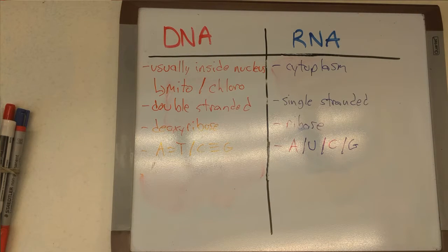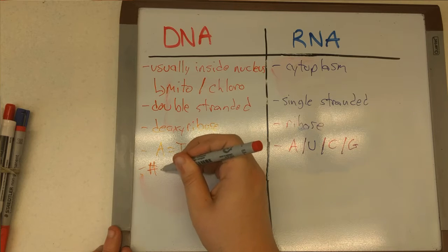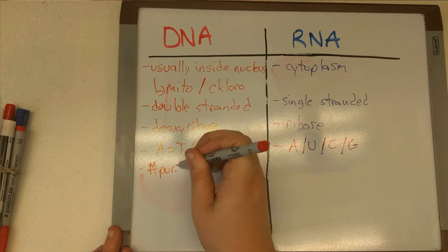RNA, on the other hand, does not have any base pairing, and just has adenine, uracil, cytosine, and guanine in its strands. Note that it is uracil and not thymine.